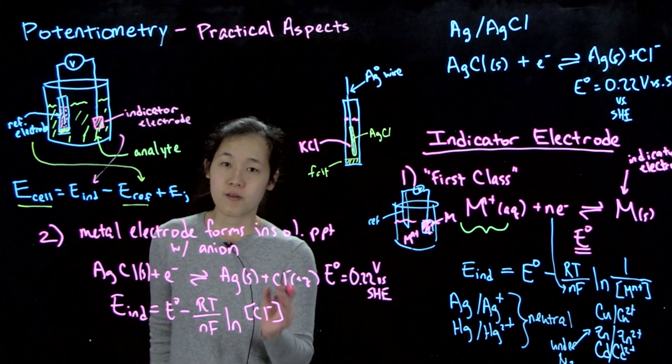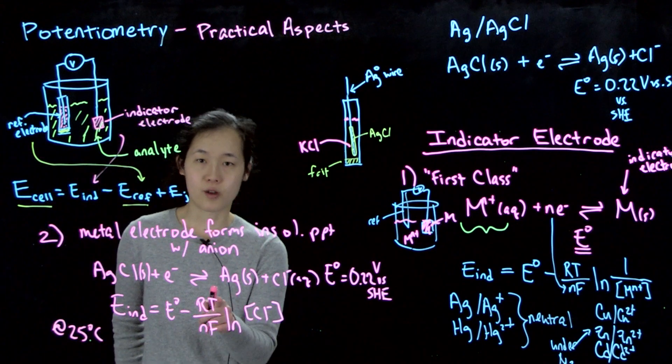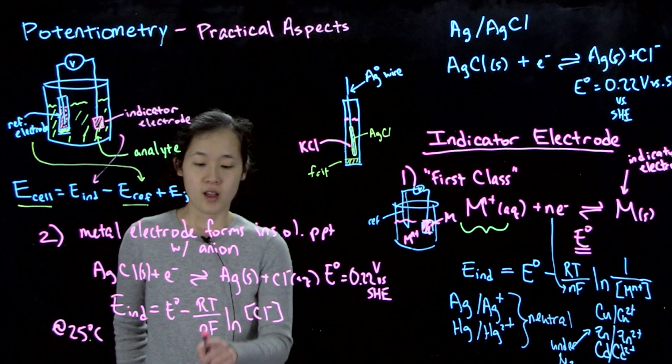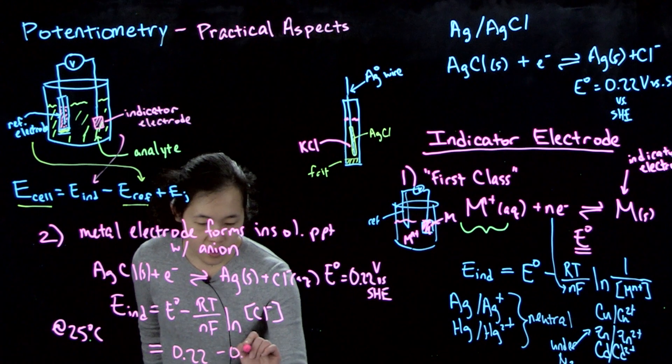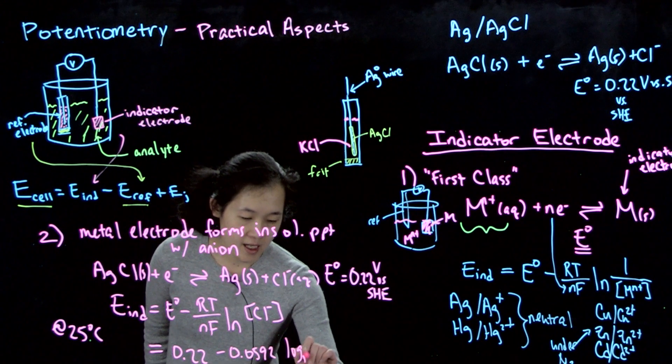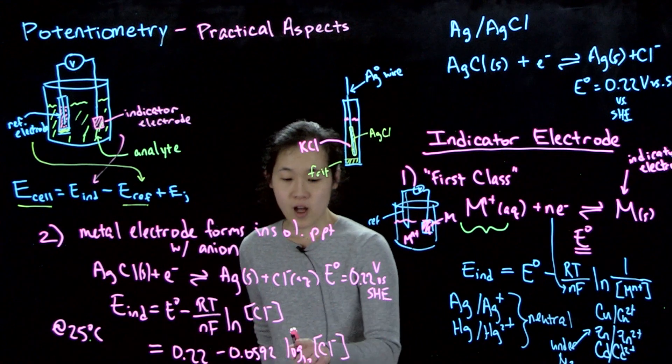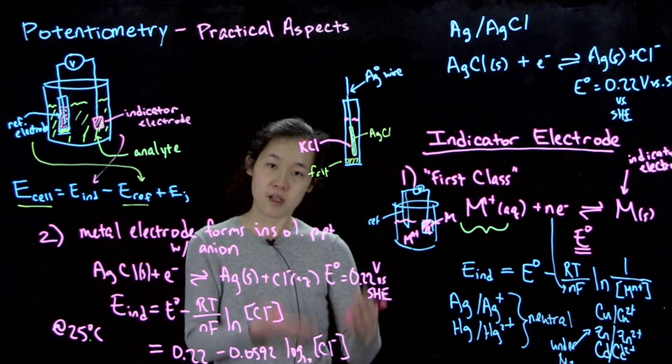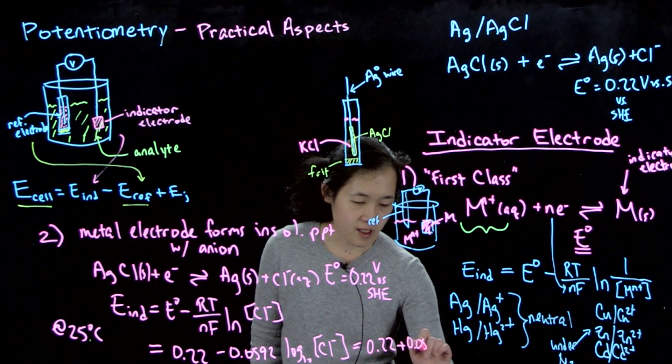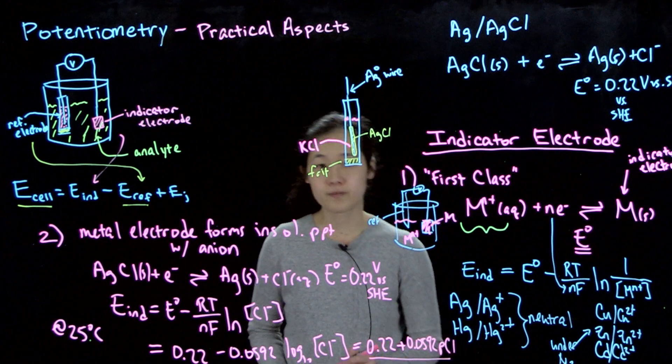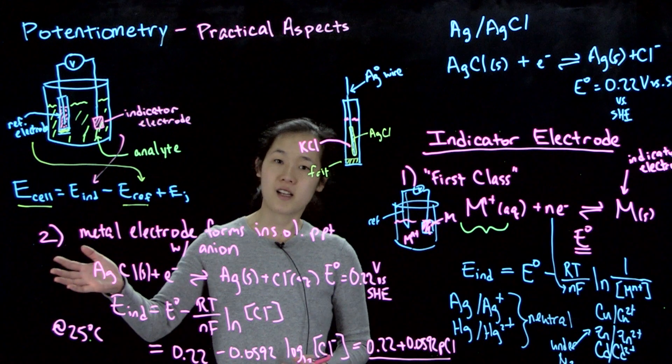In practicality, you might often see this in a different format. So if we say we're at 25 degrees Celsius, we can just directly substitute T in for 25 degrees Celsius, or 298 Kelvin. And we know what N is. N equals 1. And then we know R and F. So then we could just say that indicator potential is 0.22 minus 0.0592 log base 10 of chloride concentration. And then so this also equals the negative log of something of a concentration, like let's say pH is negative log hydronium ion concentration. So you might see this as 0.22 plus 0.0592 P chloride. And so that's our metal electrode with the forming insoluble precipitate for the second class indicator electrode.